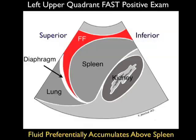Now that we've had a chance to examine several normal video clips from the left upper quadrant, let's look at a pictorial showing a positive left upper quadrant fast exam. Here we see superior located to the left, inferior to the right. We see the spleen in the middle of the image, the kidney inferiorly to the right, and the thoracic cavity with the diaphragm to the left of the spleen or superior.